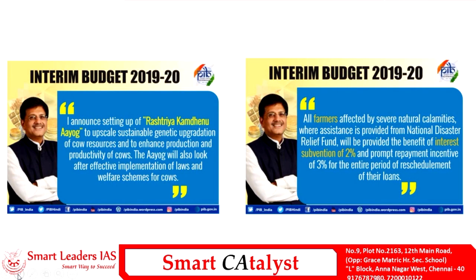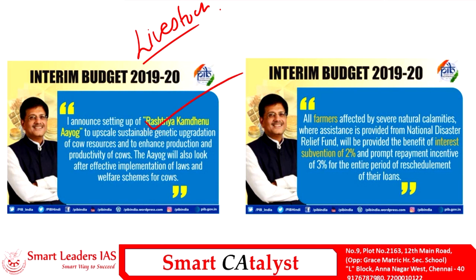Apart from agriculture, this budget also focuses on the livestock sector. Apart from the already existing Rashtriya Gokul Mission, the budget also sets up a new scheme called Rashtriya Kamdhenu Aayog, which aims to sustainably upgrade the genetic resources of cows, thereby enhancing the production as well as the productivity of cows.